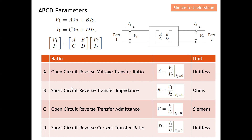B is called the short-circuit reverse transfer impedance. To find the value of B, I need to let V2 equal zero, which means I need to short-circuit the output. Once V2 is short-circuited, B is simply V1 over I2 — a short-circuit reverse transfer impedance. The unit will be ohms because it is voltage over current.